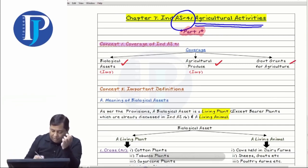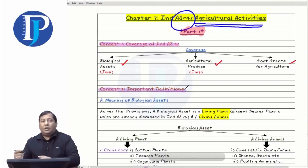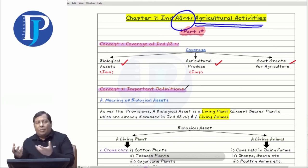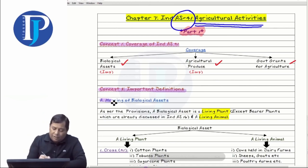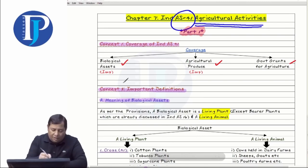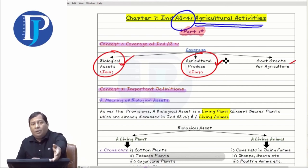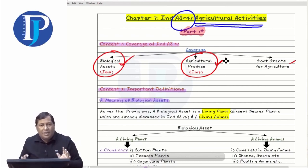Then we moved on to the second concept and started with important definitions. Before starting in AS, we can't proceed until you understand the definitions. In the definition, I first told you the meaning of biological assets. There were only two main definitions — one for biological assets and the other for agricultural produce. Then we moved to the accounting part and then the valuation part.